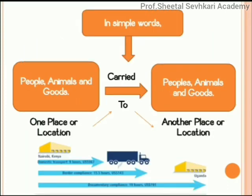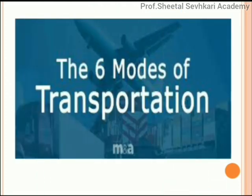In simple words, people, animals, or goods are at a first location and they are carried to a second location. This is how you can frame a definition of transportation. Now let us discuss the six modes of transportation in this video.